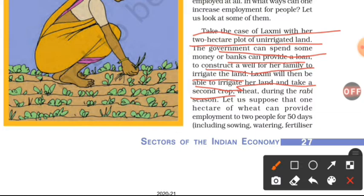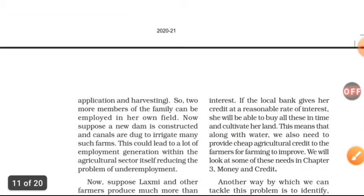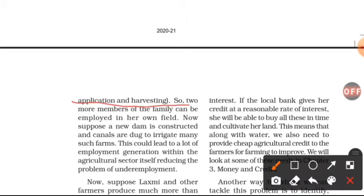She can then take a second crop — meaning she can grow two crops at least in a year. For example, wheat during the rabi season. One hectare of wheat can provide employment to two people for 50 days, including sowing, watering, fertilizing, and harvesting. So two more family members can be employed in her own field.